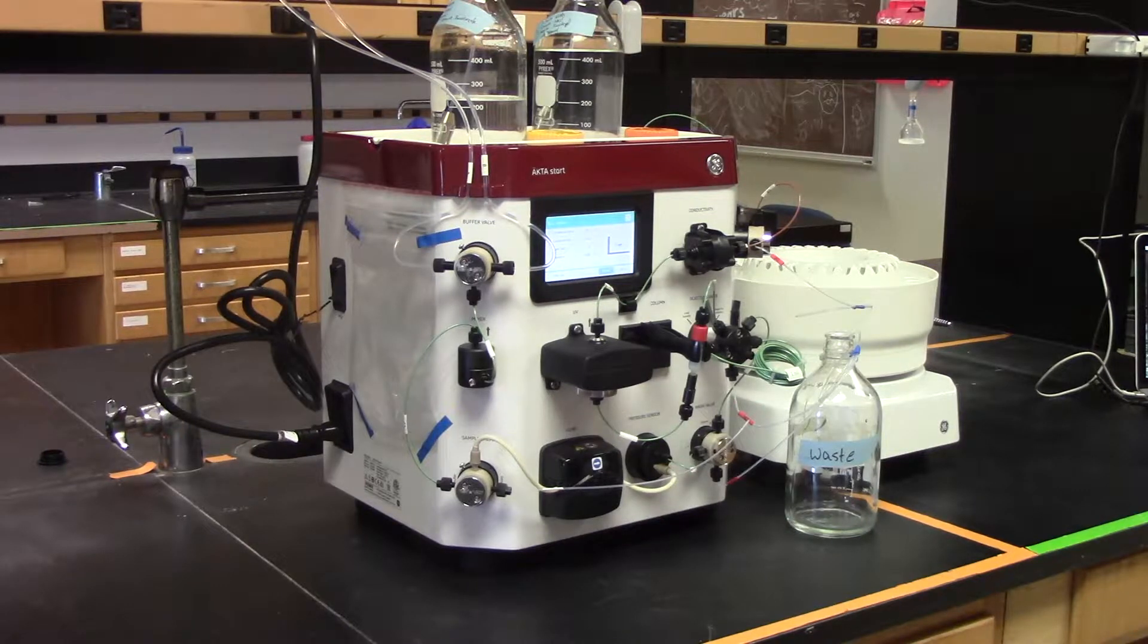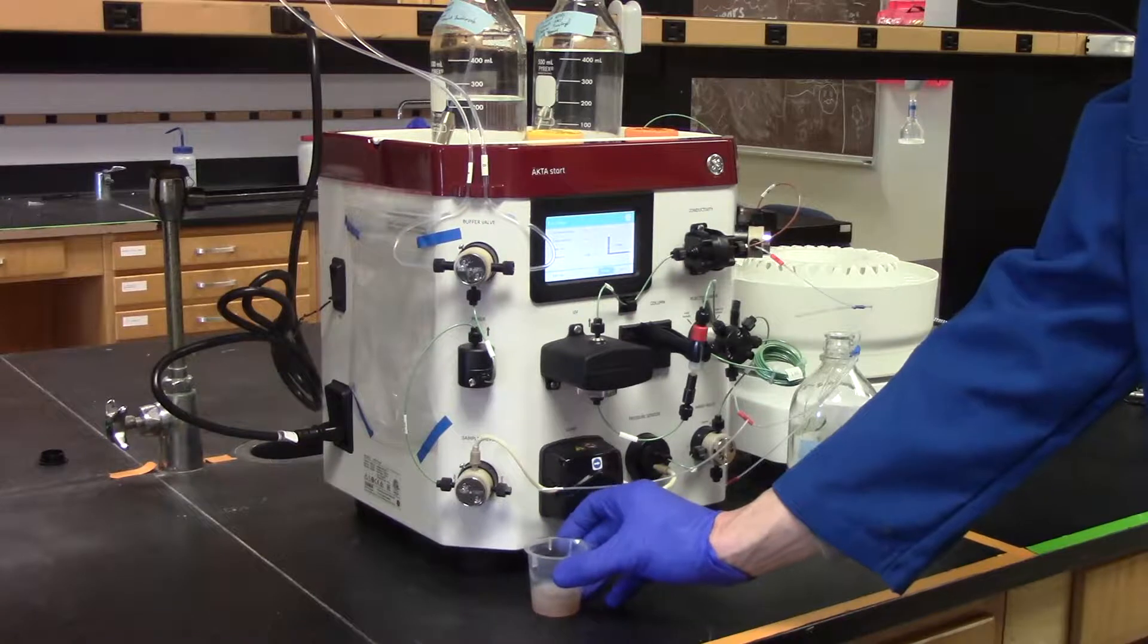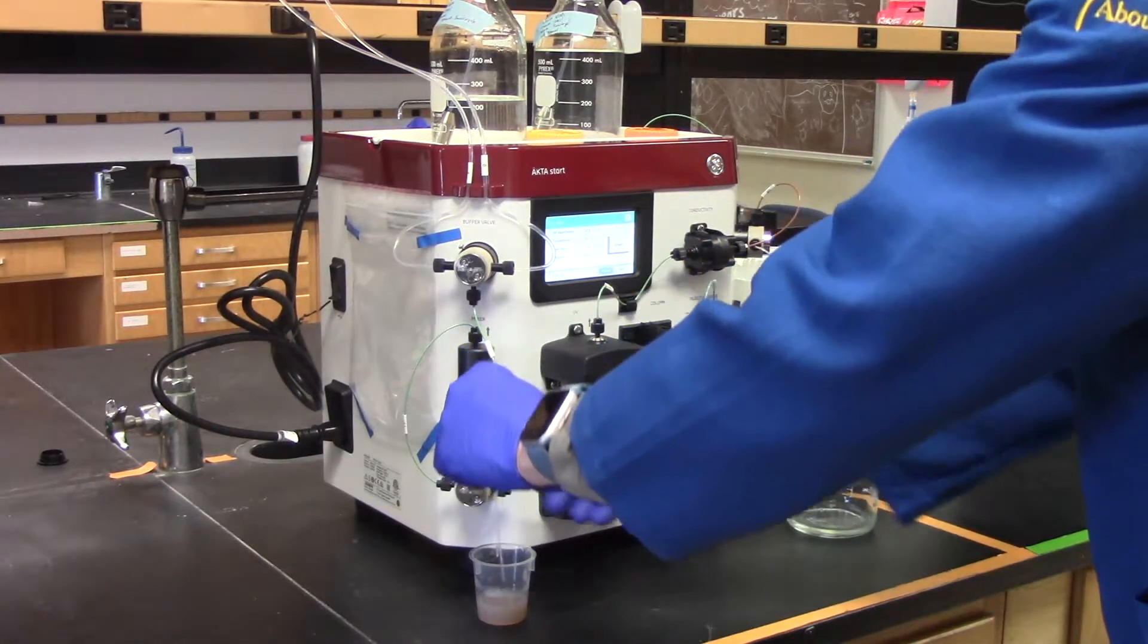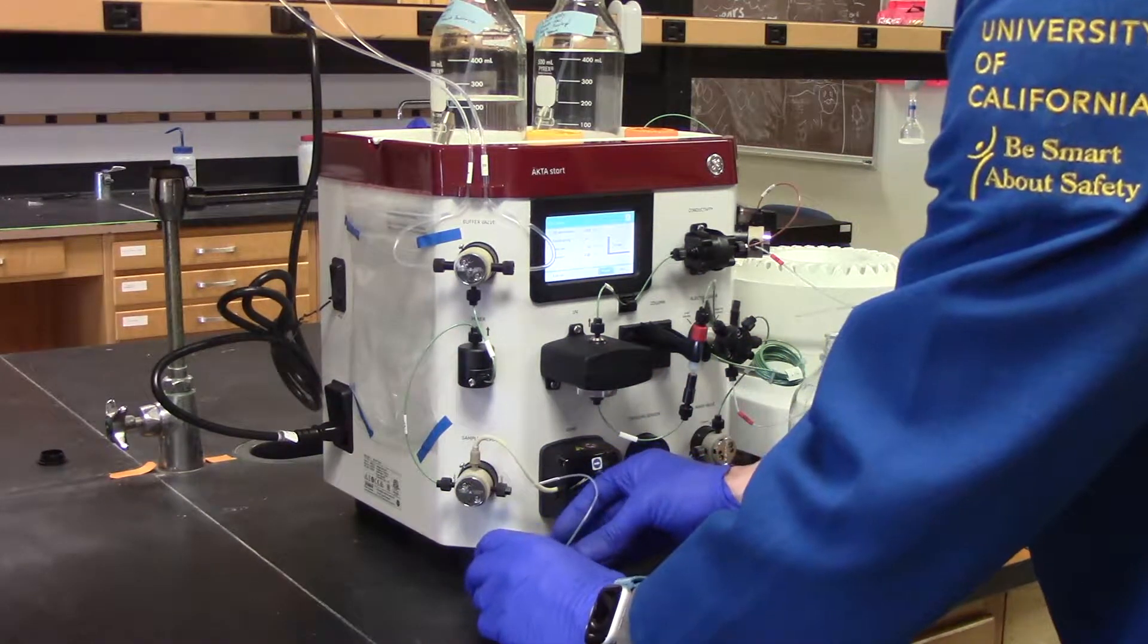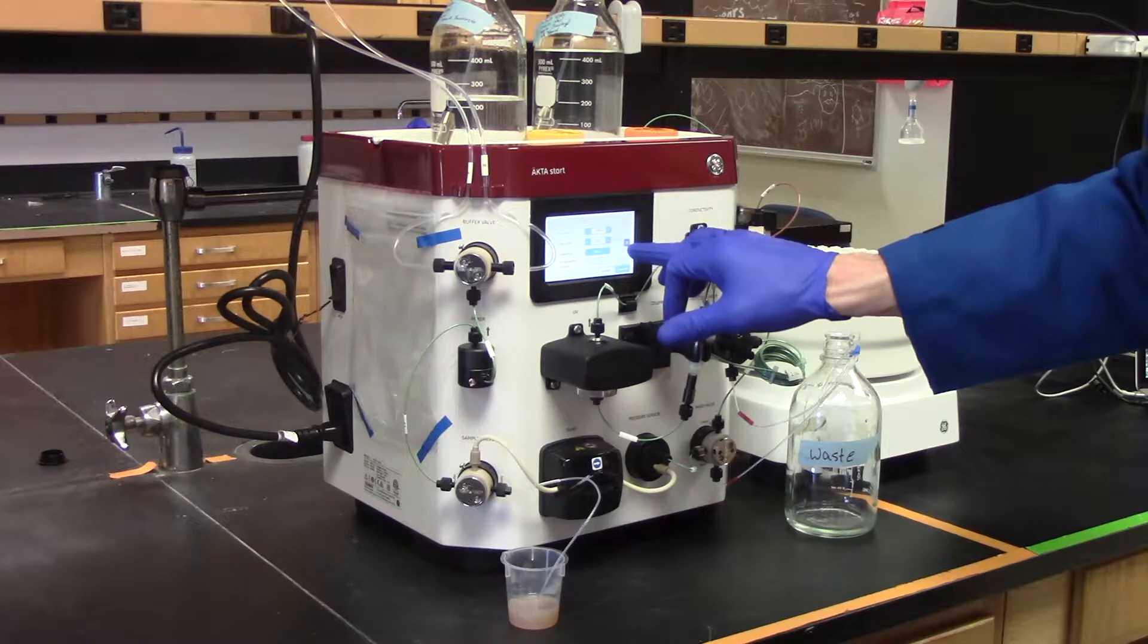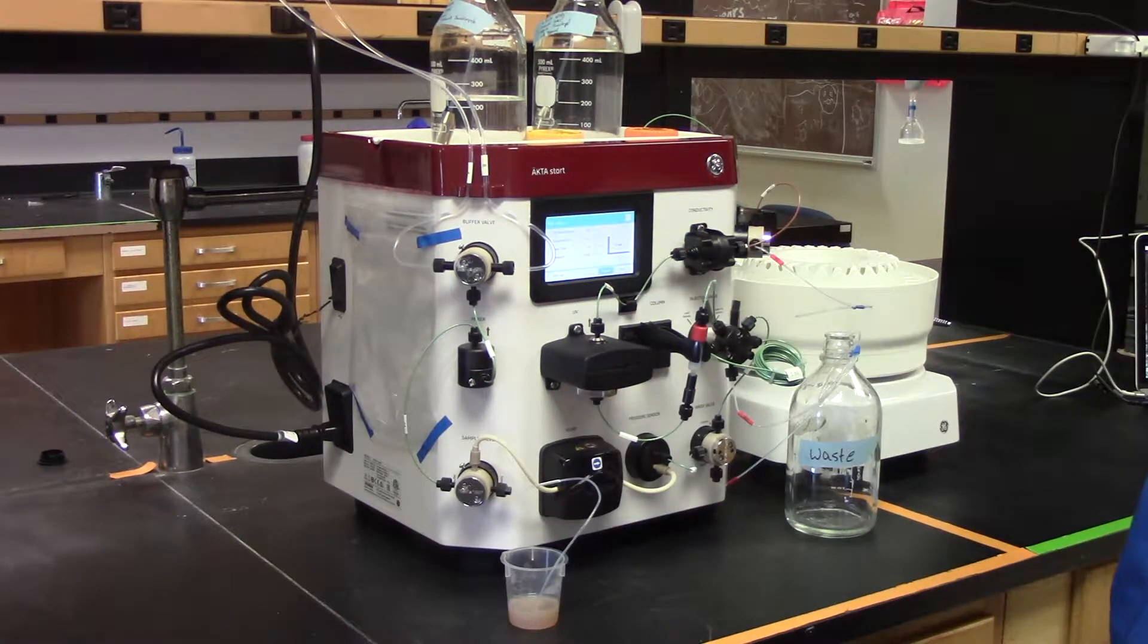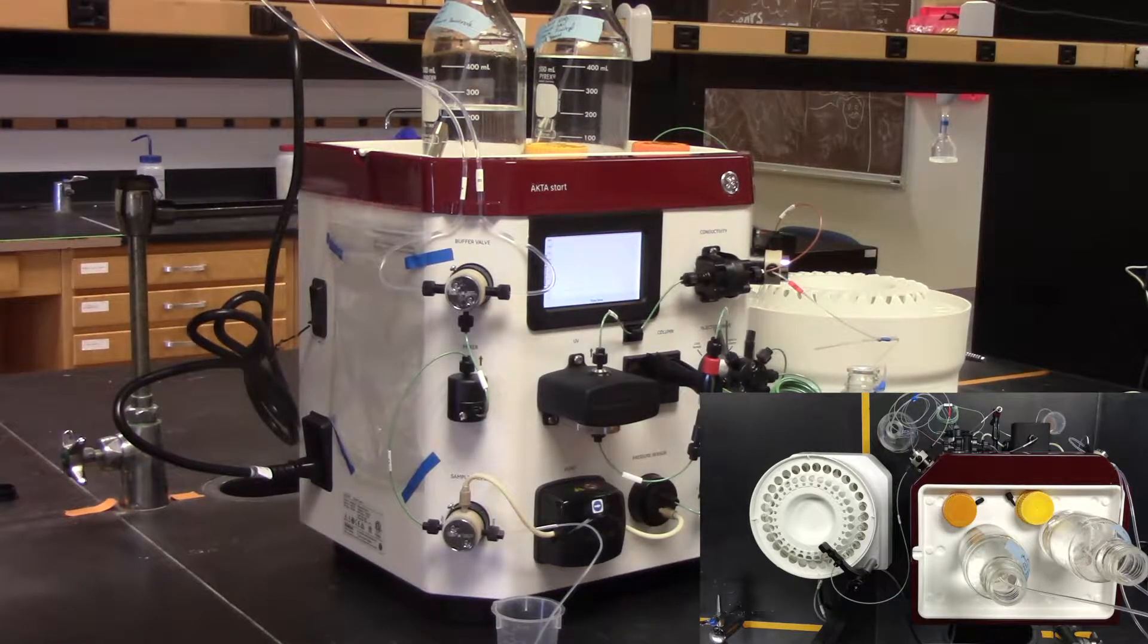Next, add your lysate to the FPLC by inserting the sample line into your lysate. Be sure not to spill your lysate. Purge your sample line by bypassing the column and flowing the FPLC for 1 or 2 minutes so that no bubbles are in the line. Switch the valve so that your lysate flows back over the column and load your lysate over the column.